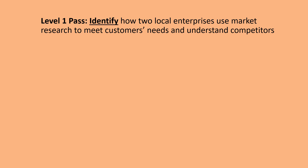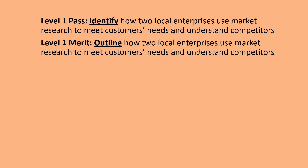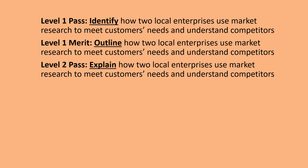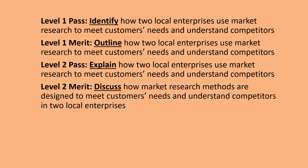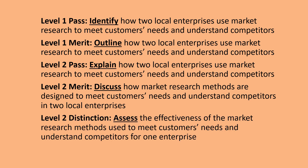To get a level one pass, we're being asked to identify how two local enterprises use market research to meet customers' needs and understand competitors. To turn that into a level one merit, the only thing that has changed is the word 'outline.' At level two pass, it's exactly the same thing but with the word 'explain.' At level two merit, the word is 'discuss' how the market research methods are designed. And finally, to get a distinction, we are going to 'assess' how effective they are. In this video, I'm going to take you through identify, outline, explain, discuss and assess in more detail with examples.